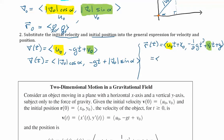After substitution, the position vector equals: x(t) = magnitude of v sub zero times cosine(alpha) times t (plus x sub zero which is zero), and y(t) = negative one-half g·t² plus the initial speed times sine(alpha) times t (plus y sub zero which is zero). Now we have a formula for position and velocity given the initial angle and initial position at (0, 0).